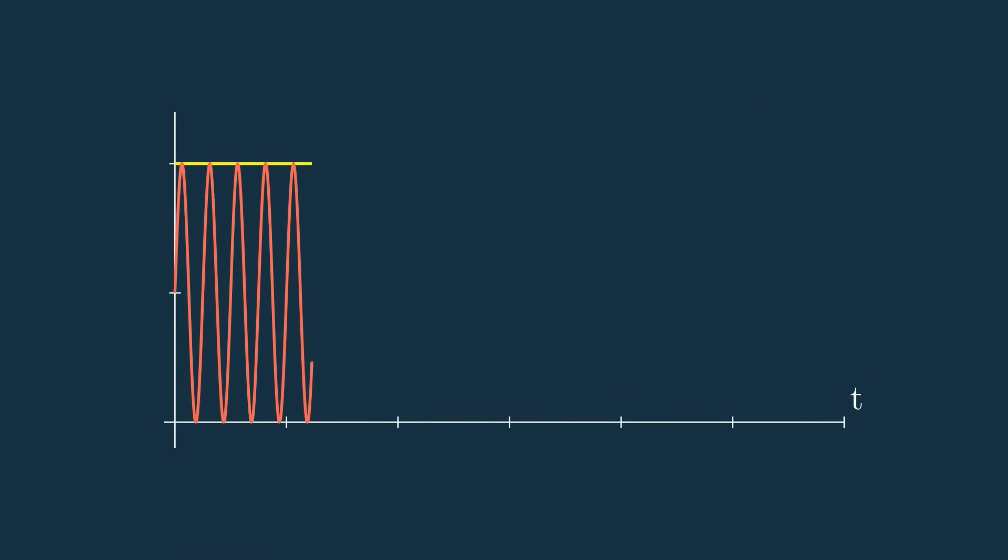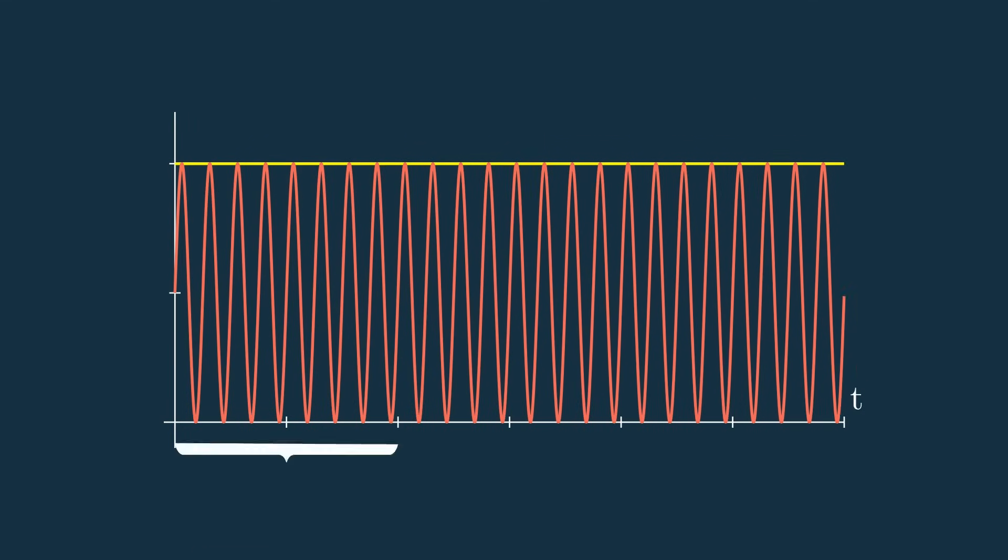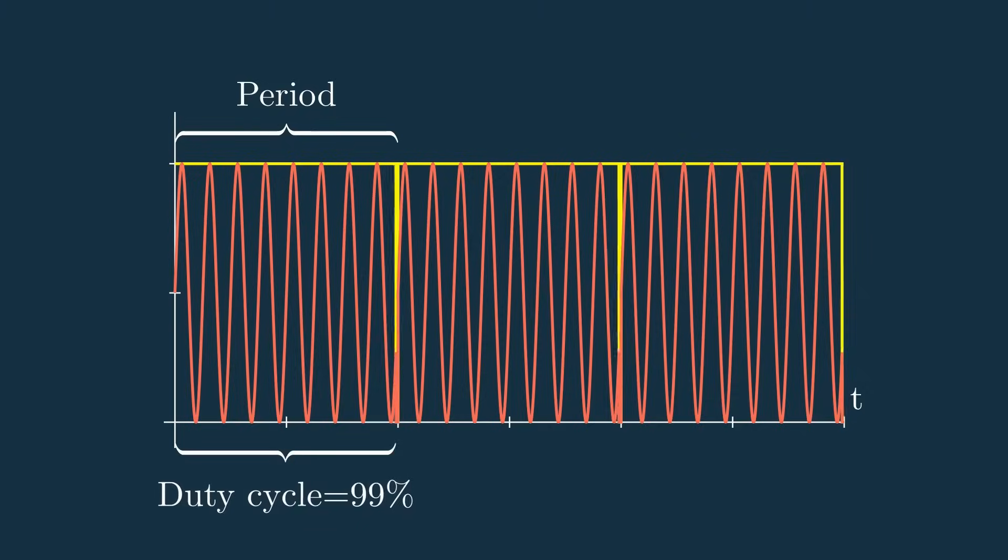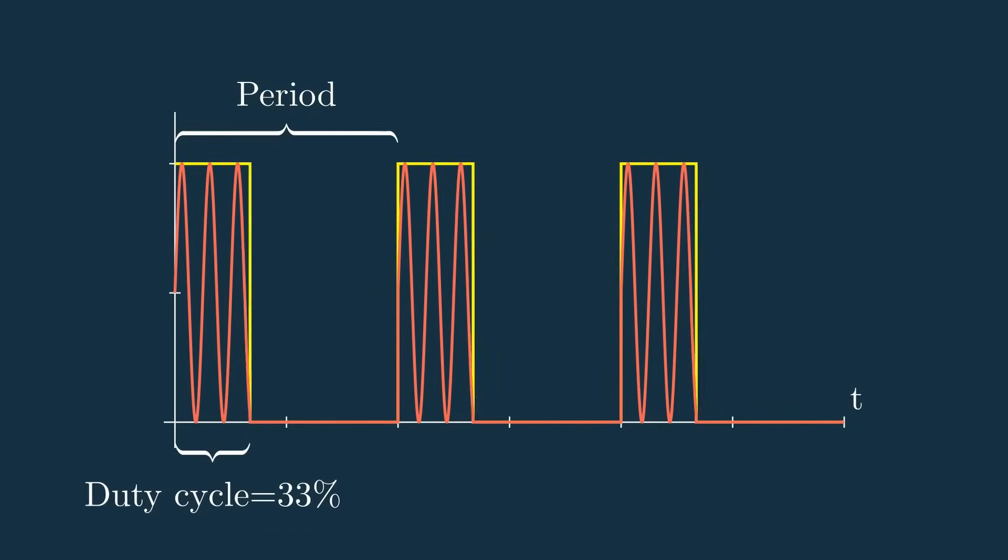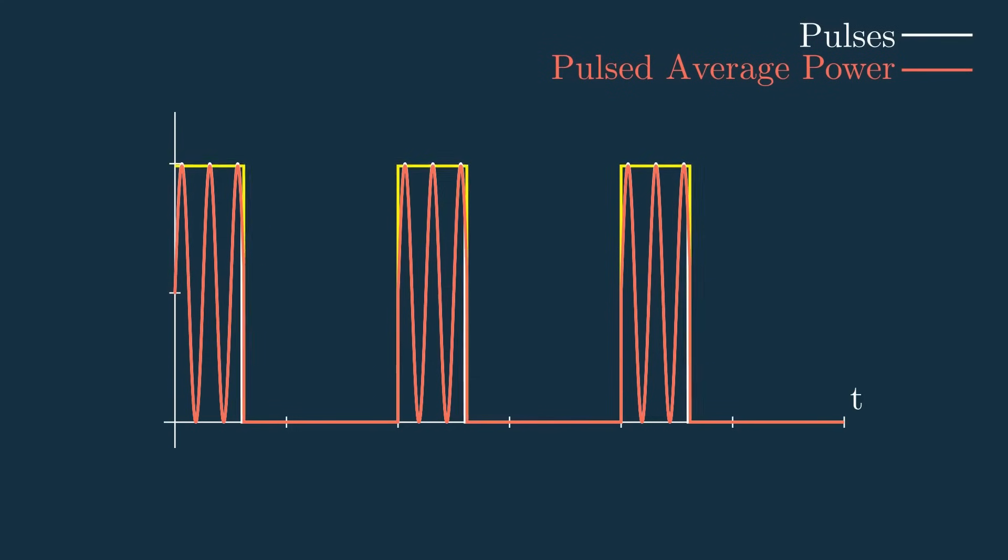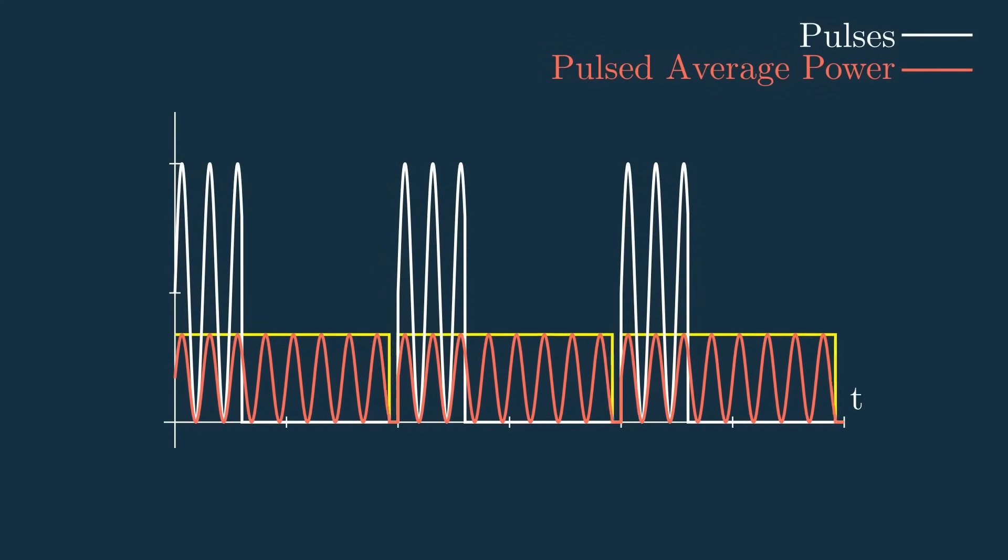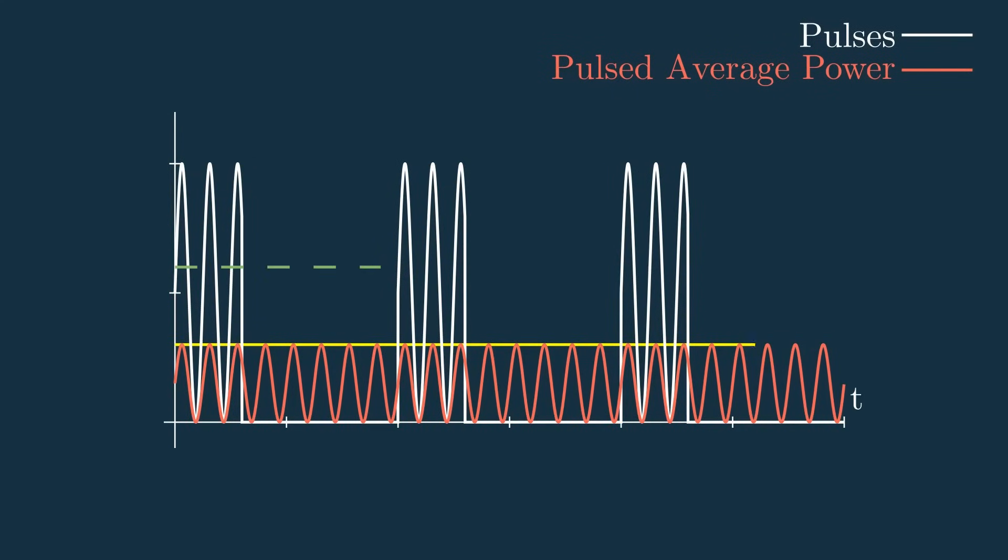Unfortunately though, with a pulsed radar, we're only transmitting for a small fraction of the time, sometimes with a duty cycle of less than 10%, while the rest of the period is spent waiting for the signal's return. This means that if we stretch out the pulse's power over the whole period to get an average power, we get a much smaller number.